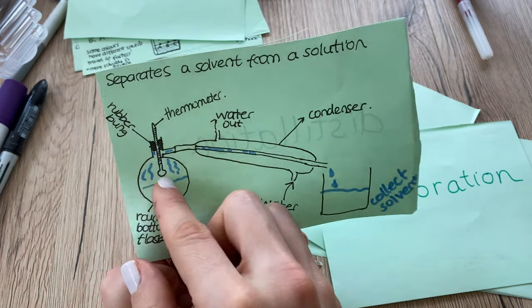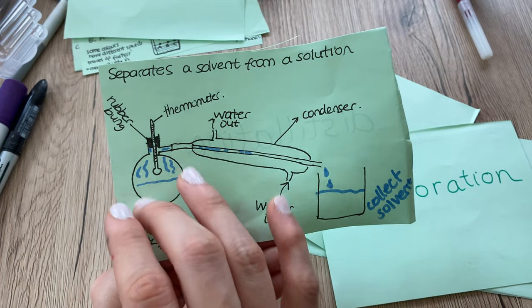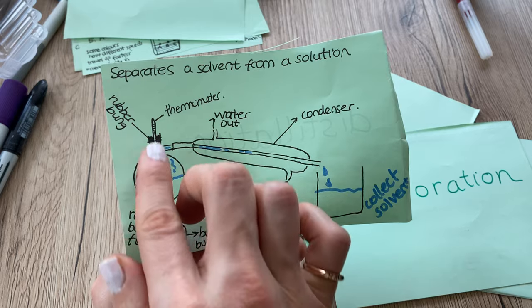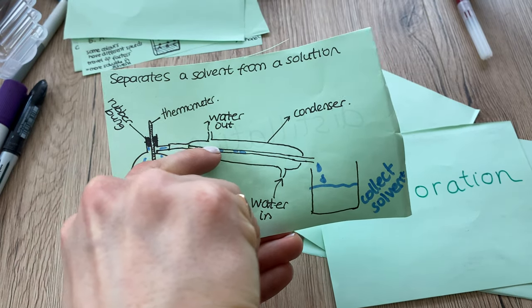Let's say I have salt and water here. When I heat up the water, water is going to turn into gas and there's nowhere to go because there's a rubber bung, so it's going to go down the condenser.